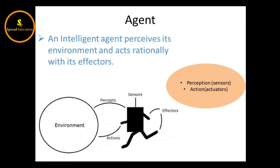An intelligent agent perceives its environment and acts through its effectors. Sensors perceive the environment. A human agent has eyes, ears, and other organs which act as sensors, and hands, legs, mouth, and other body parts acting as actuators. A robotic agent has cameras and other devices which act as sensors, and various parts like motors acting as actuators.